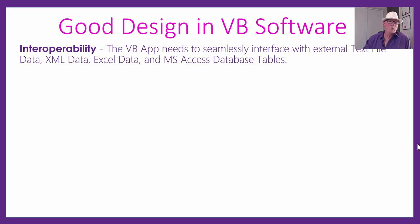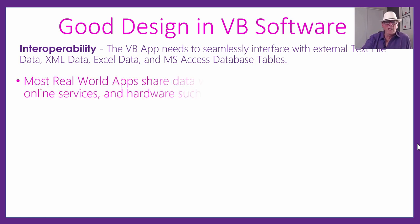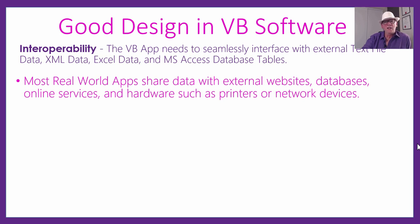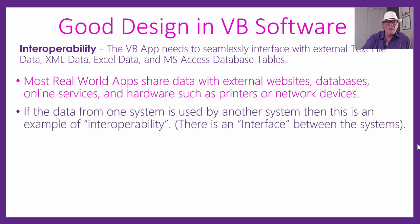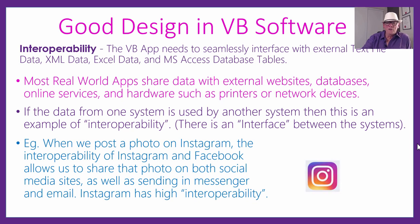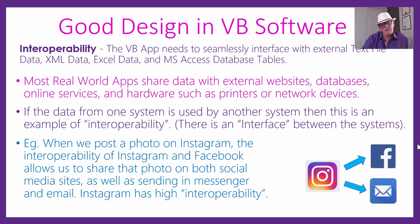Interoperability is when we connect up with other systems — reading data from a text file, an XML format data file, Excel data from a Microsoft Excel spreadsheet, or a Microsoft Access database table. Most real-world apps share their data with websites or printers. When you connect to another system and share data seamlessly, that's called interoperability. For example, when we put a photo on Instagram, there's interoperability between Instagram, Facebook, email, and Messenger — so you can easily get that post onto Facebook or email it to someone. Instagram has great interoperability.